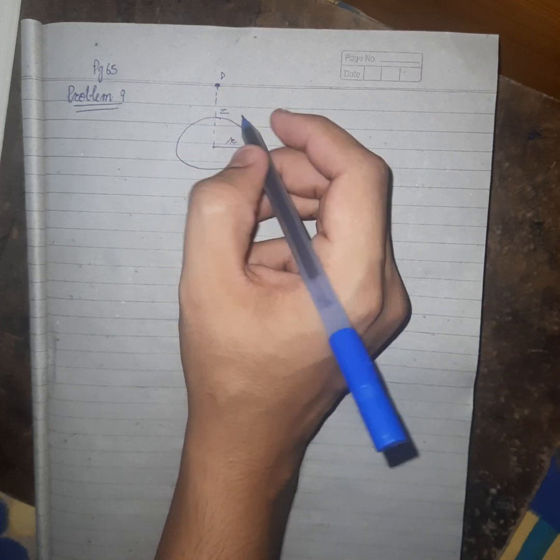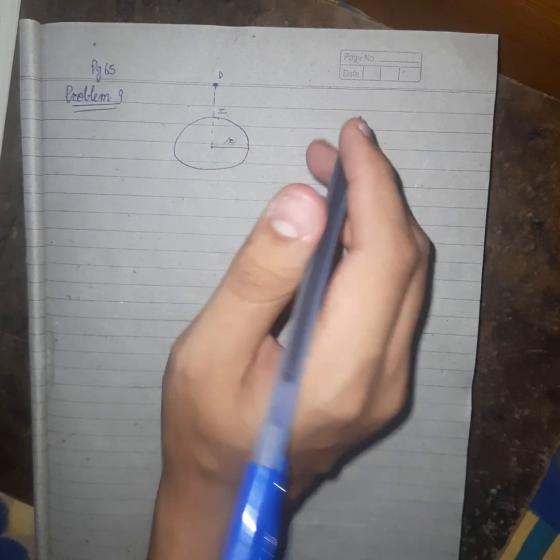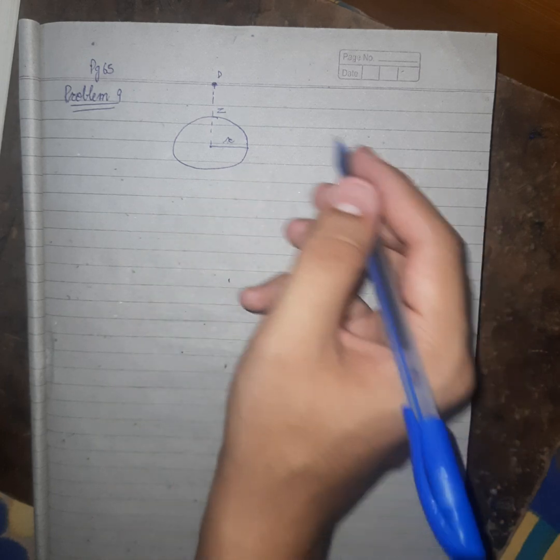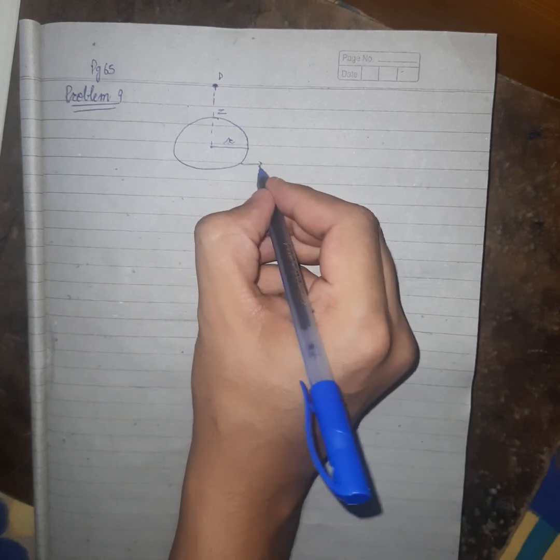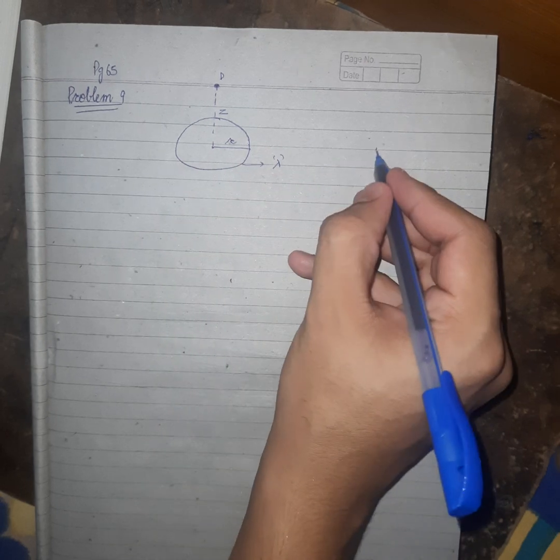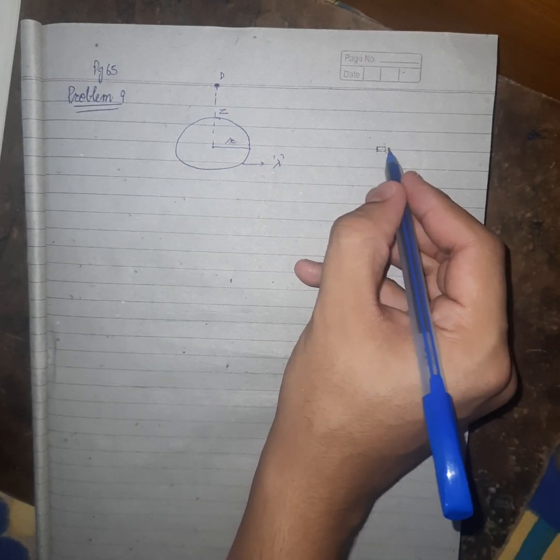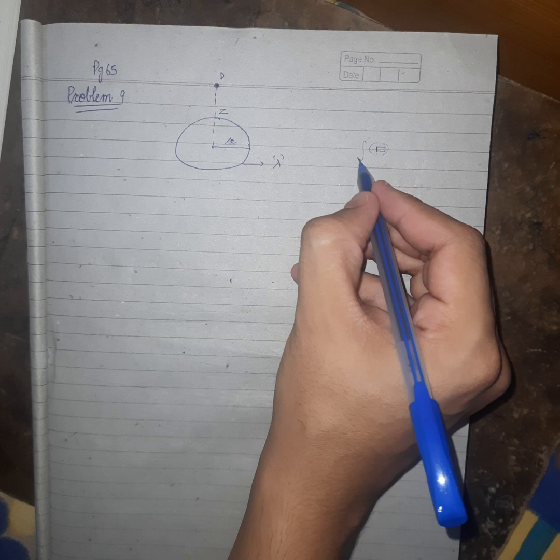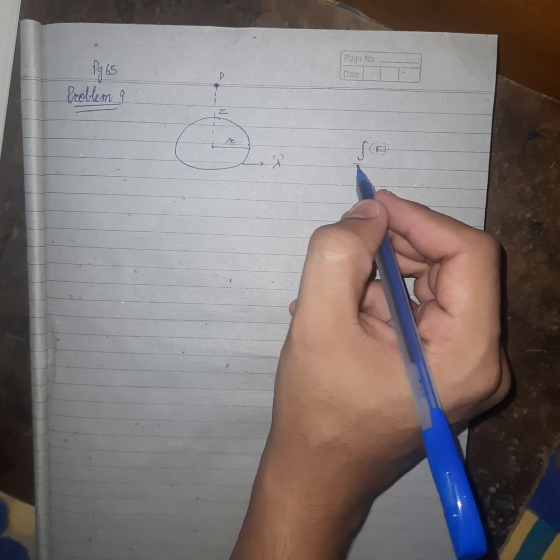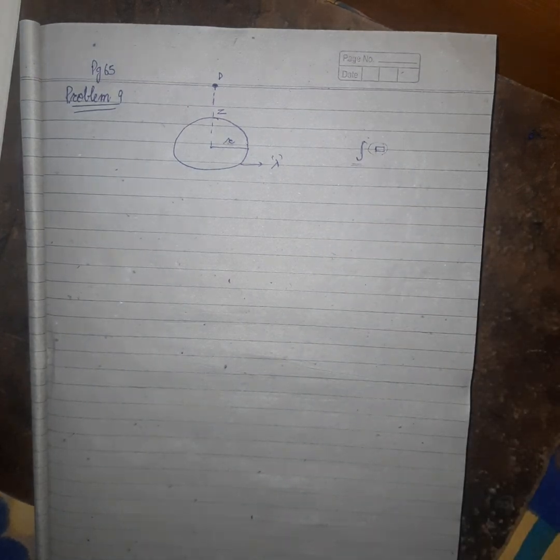This is a point P at distance z. We have to calculate the electric field here. So the formula, the concept is the same. As this is a uniform line charge lambda, we have to take a small portion and calculate electric field according to that small portion, and then integrate for the whole surface.